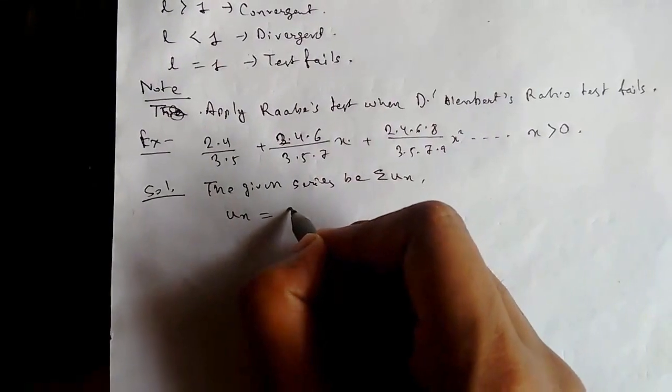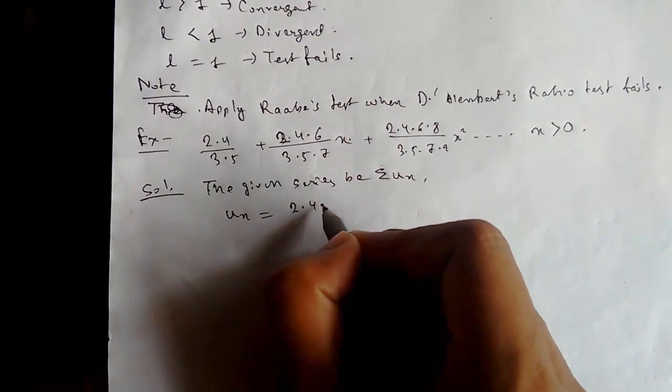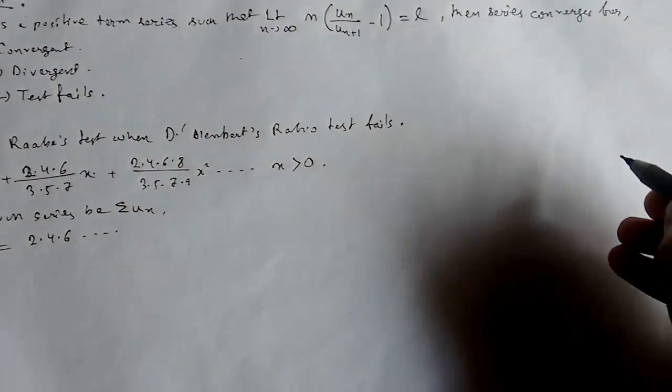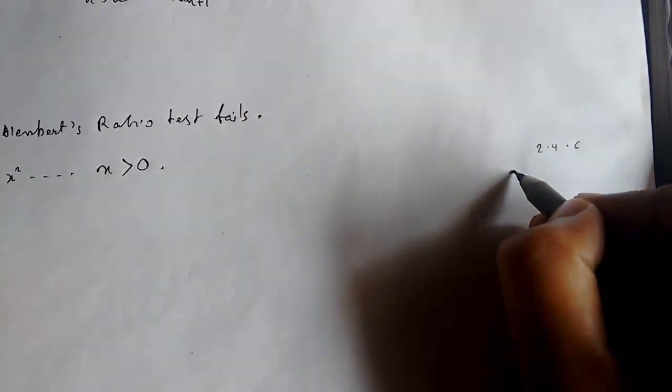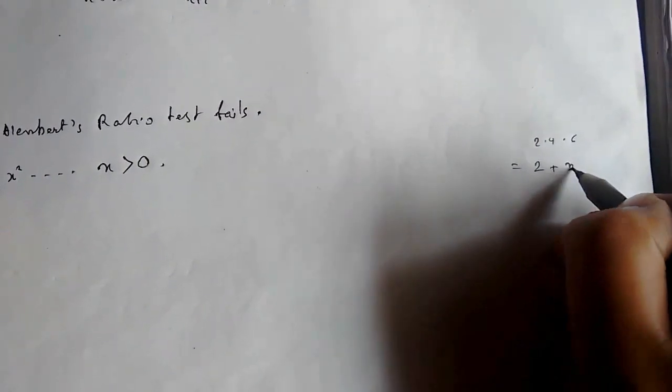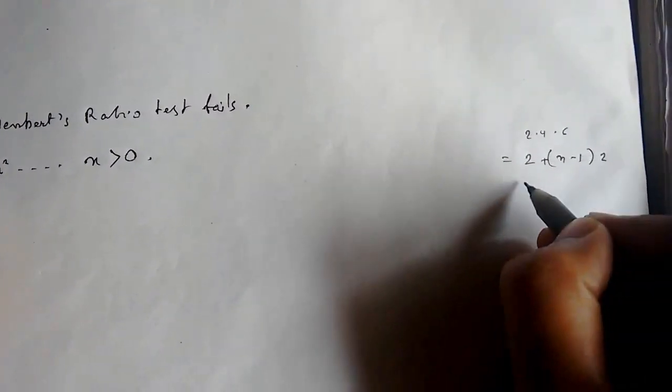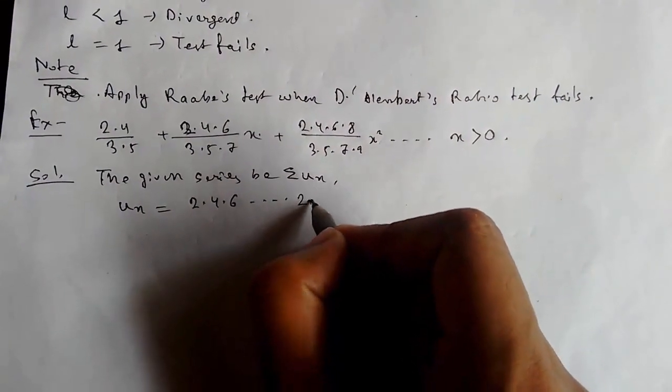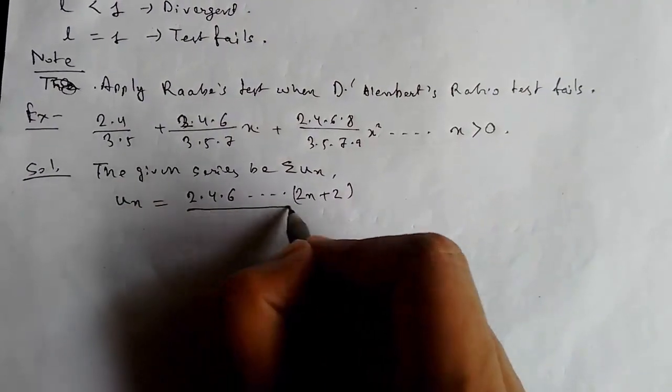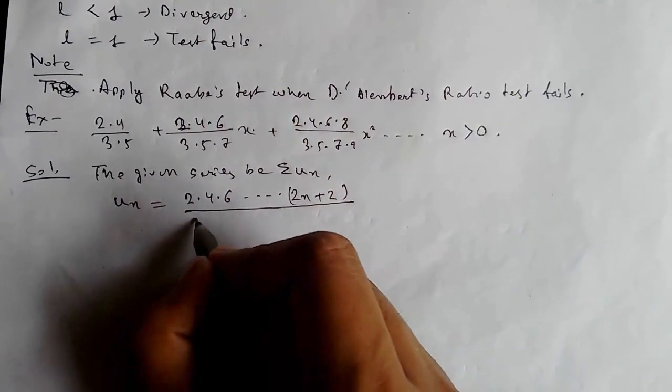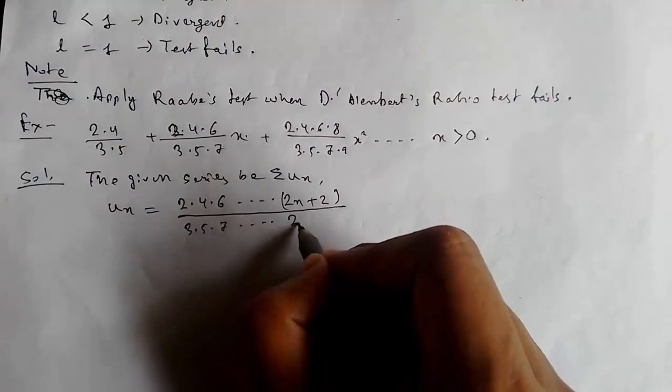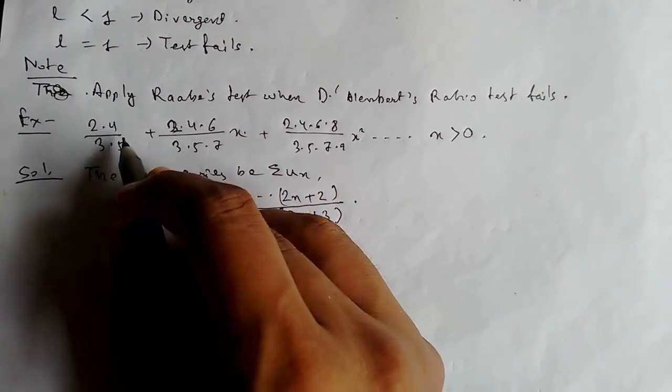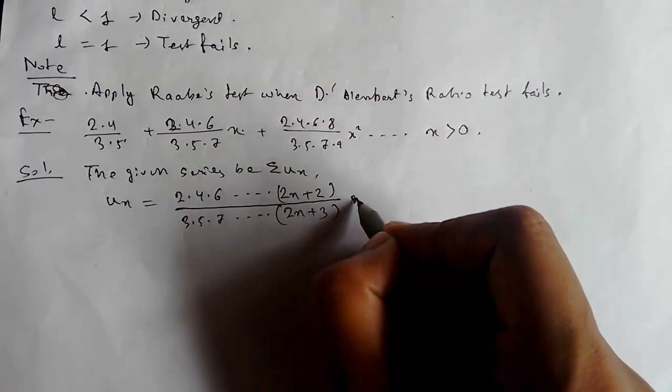So let us take the solution. The given series, summation UN, then UN equals... we can see that this is 2, 4, 6, so this will be (2·4·6...·(2n+2))/(3·5·7...·(2n+3)).